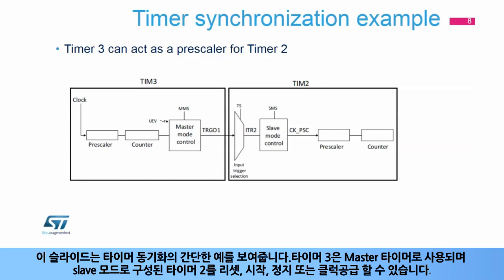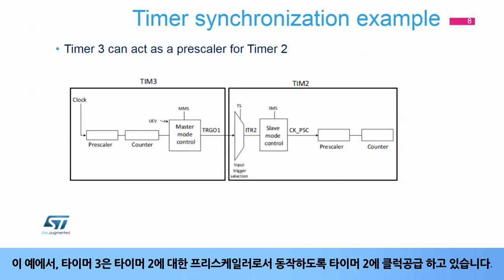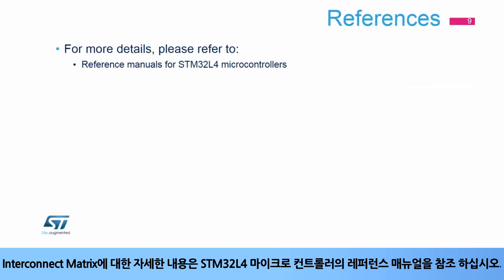This slide shows a simple example of timer synchronization. Timer 3 is used as the master timer and can reset, start, stop, or clock timer 2 configured in slave mode. In this example, timer 3 is clocking timer 2 so that it acts as a pre-scaler for timer 2. For more details about the interconnect matrix, refer to the reference manual for STM32L4 microcontrollers.